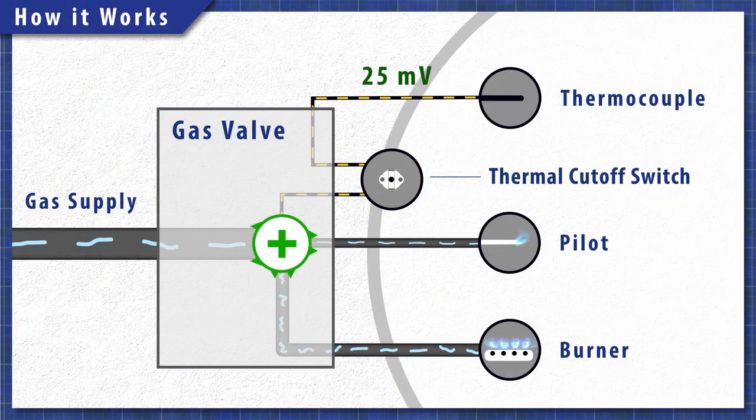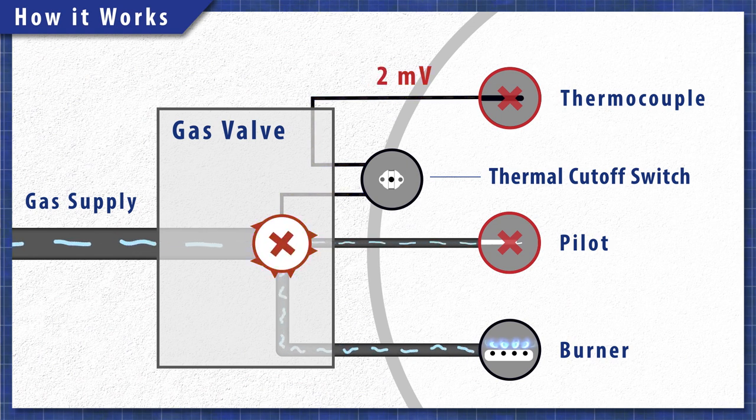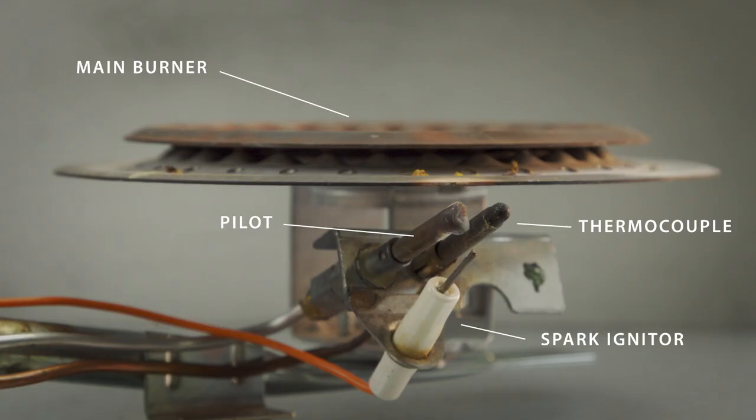The thermocouple also acts as a safety switch. If the pilot light goes out, then the thermocouple will cool down, the voltage will drop, and the gas valve will shut off. This prevents unburnt gas from being released into your home. Now if the thermocouple is faulty, then it will also prevent the pilot from staying lit.